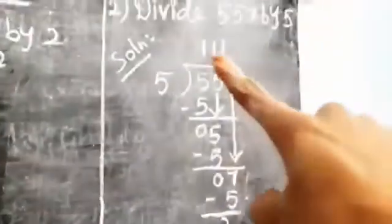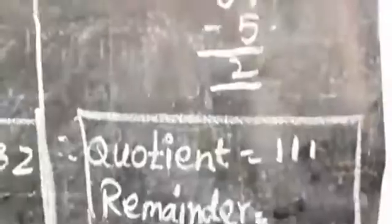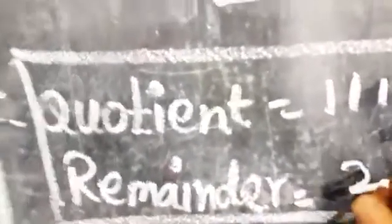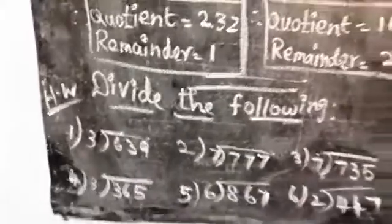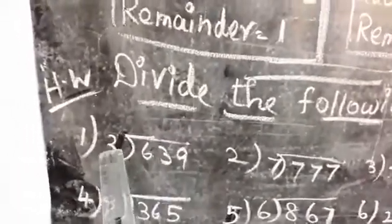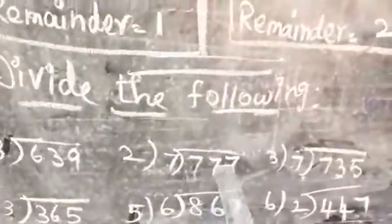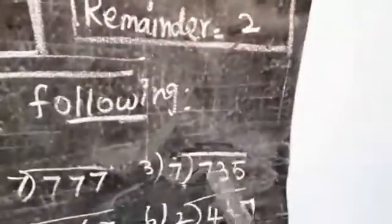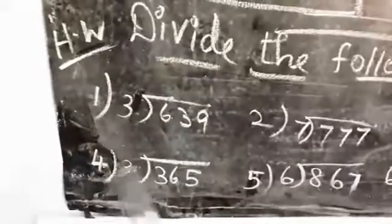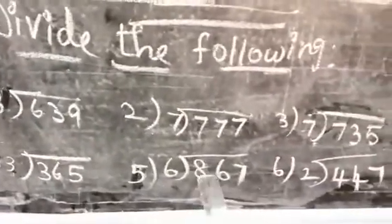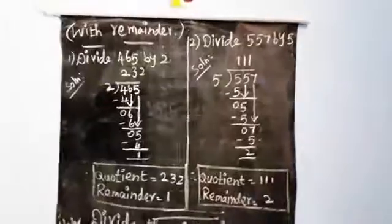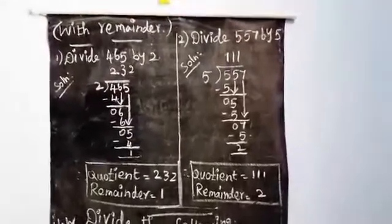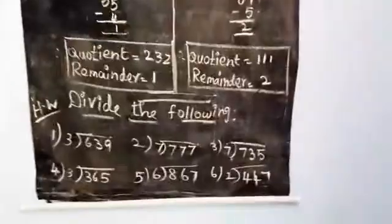Therefore, quotient is 111 and remainder is 2. Dear children, this is your homework — divide the following and find the quotient and remainder: 1st: 639 by 3; 2nd: 777 by 7; 3rd: 735 by 7; 4th: 365 by 3; 5th: 867 by 6; 6th: 447 by 2. Take your notebook and pencil, write the division of 3-digit numbers by 1-digit numbers, and do the homework. Thank you, children.